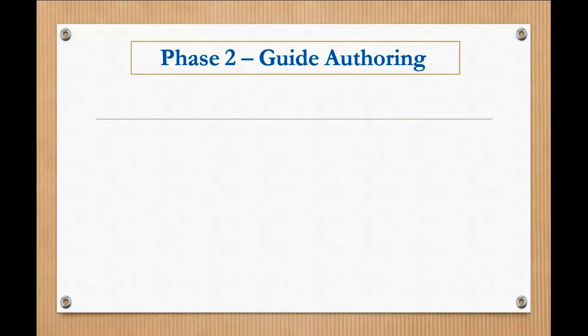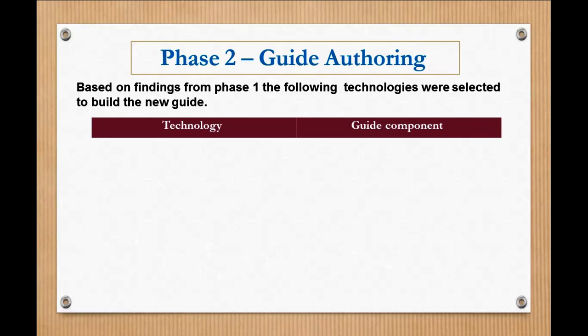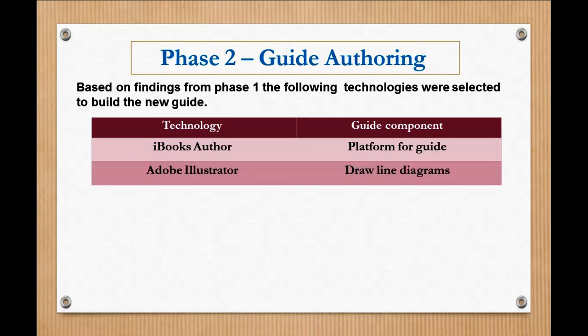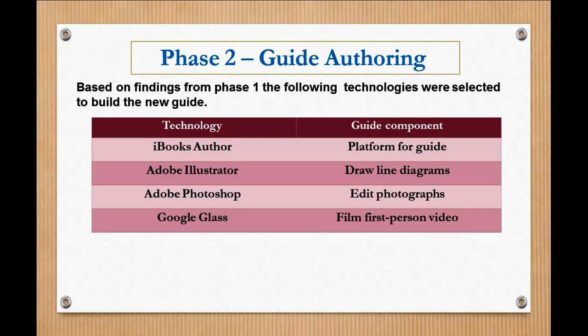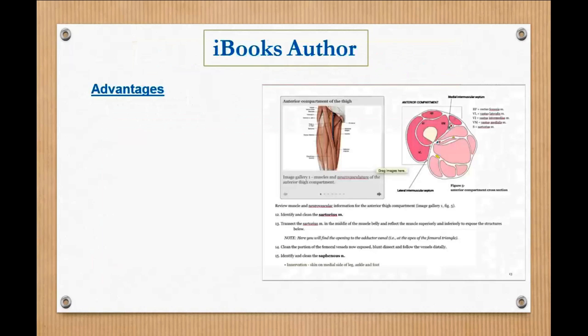So based on all the information we gathered in phase one, figured out the areas we wanted to address, and then selected different technologies we'd like to use to build this guide. We built the guide in iBooks Author. Created some line diagrams in Adobe Illustrator. We edited some photographs that we took of cadavers in Photoshop. Created some first-person film footage with Google Glass and edited that in Final Cut Pro. And then also made an interactive learning module with Articulate Storyline.